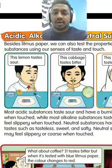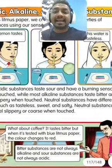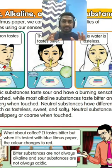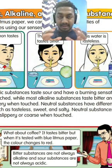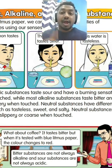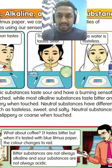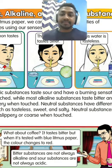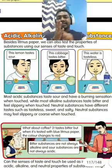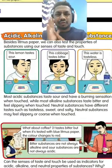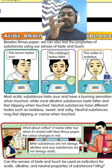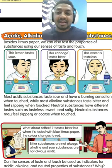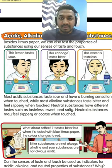Most alkaline substances — again, most, not all — taste bitter and feel slippery when touched. For example, soap is alkaline, and when you touch soap it feels slippery.